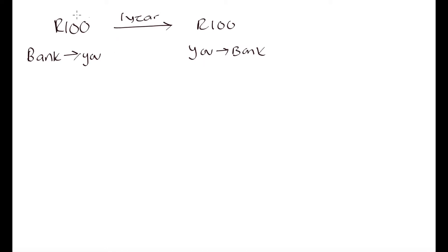So what is in it for the bank to do this transaction? What happens is the bank is going to charge an additional amount of money that you will have to pay back at the end of your term. At the end of the year, the bank charges an additional amount on top of the money you borrowed from them, and this money is known as interest.